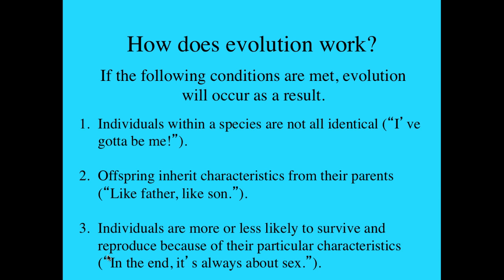If individuals within a species are not all identical, if offspring inherit characteristics from their parents, and if some individuals are either more or less likely to survive and to reproduce because of the particular characteristics they possess, then the population will change over time.